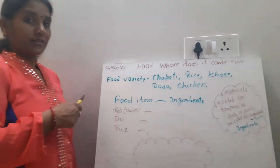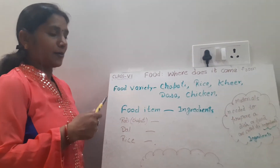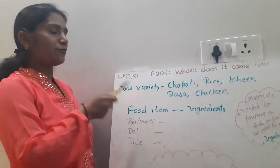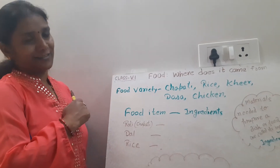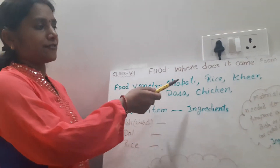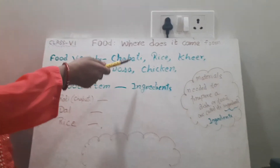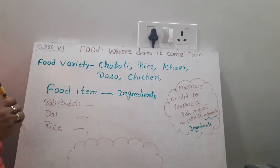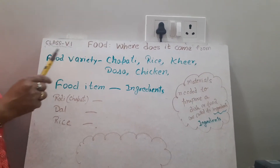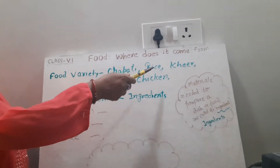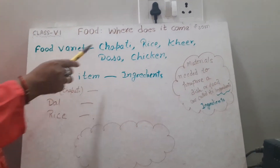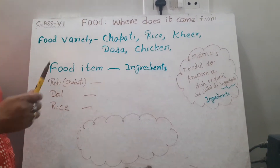Now you are at home, so you are taking a lot of food varieties. Let's discuss the food varieties. There are different food varieties which I have written here, like Chapati, Rice, Kheer, Dosa, and Chicken. Dear students, how are they made? Let's discuss this.